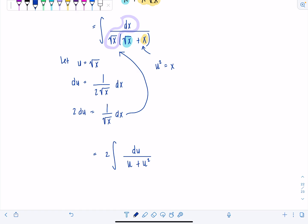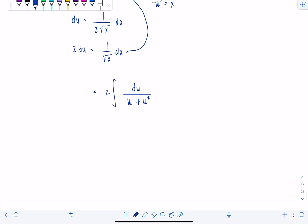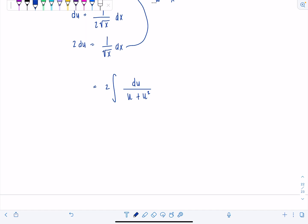What to do with this? 1 over u plus u squared. That's not some known antiderivative. What we're going to do is, yes, partial fraction decomposition. So we've got, let's do that off to the side right now.